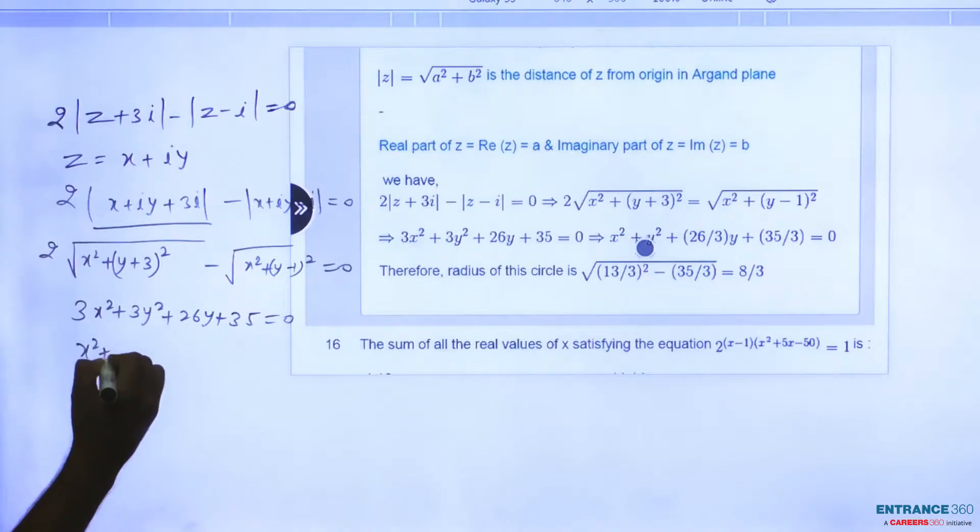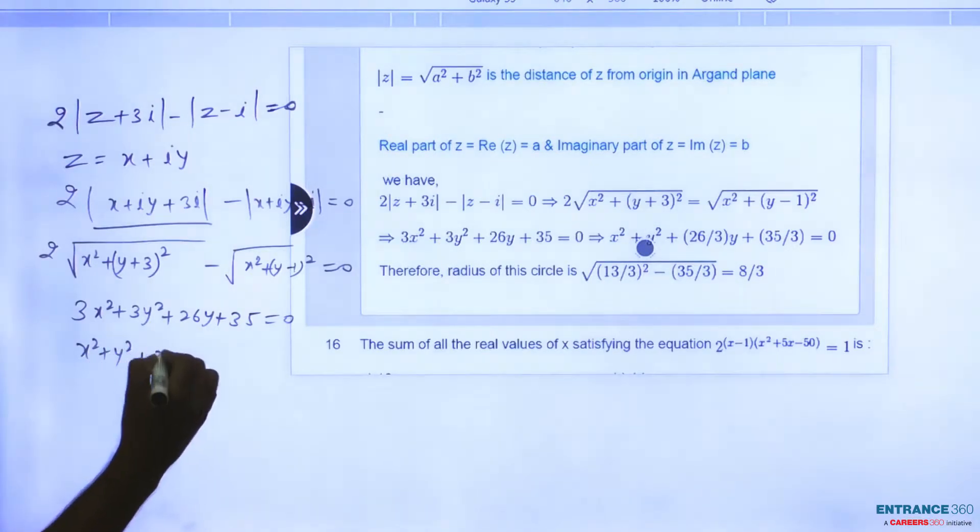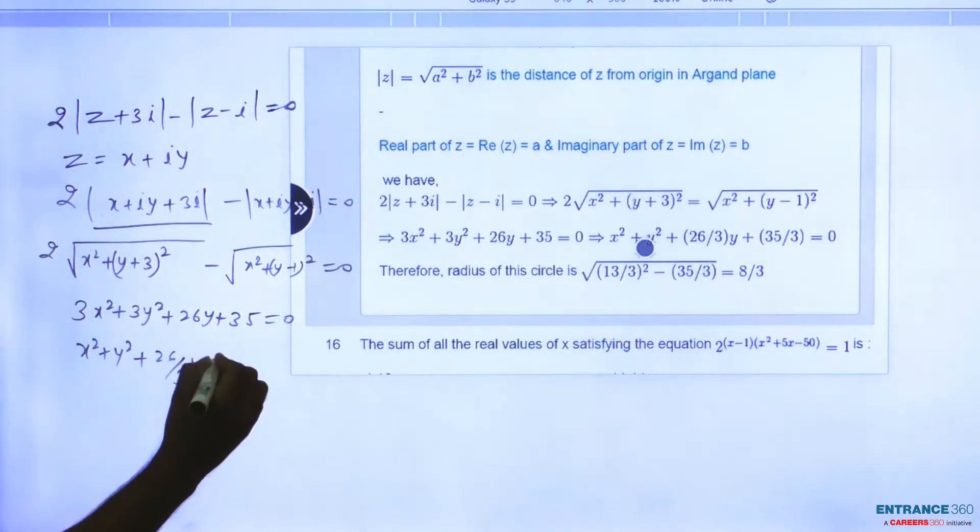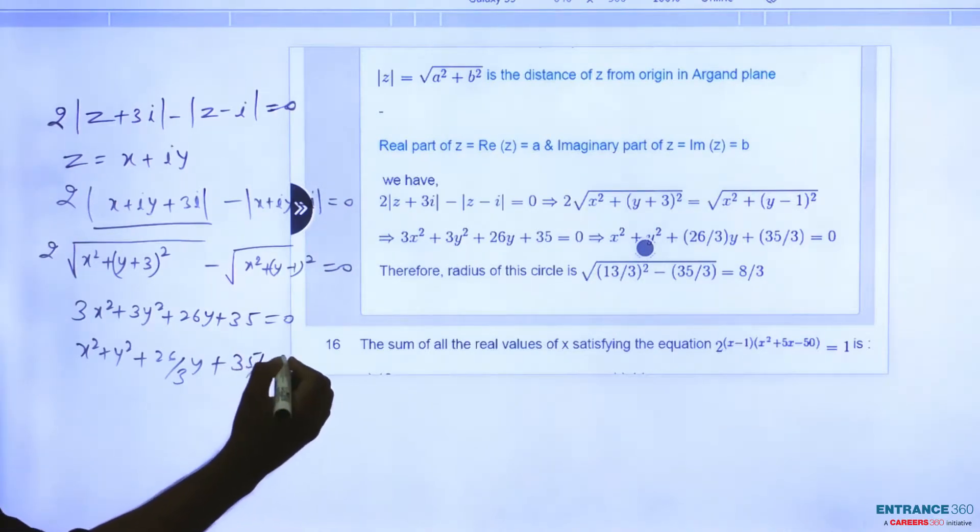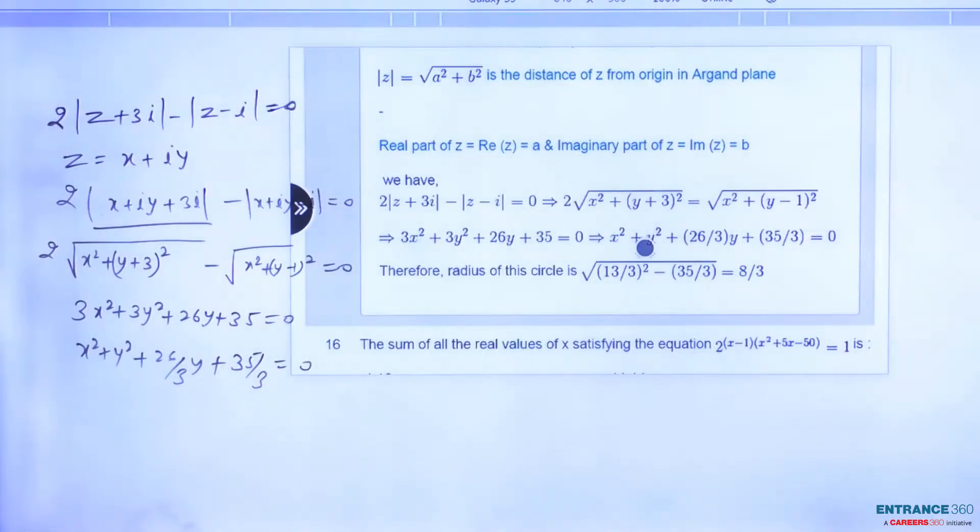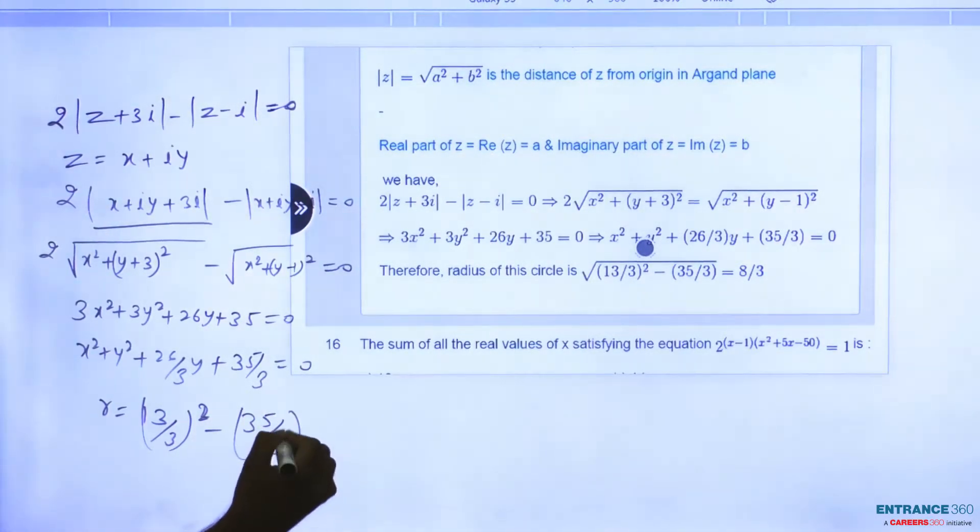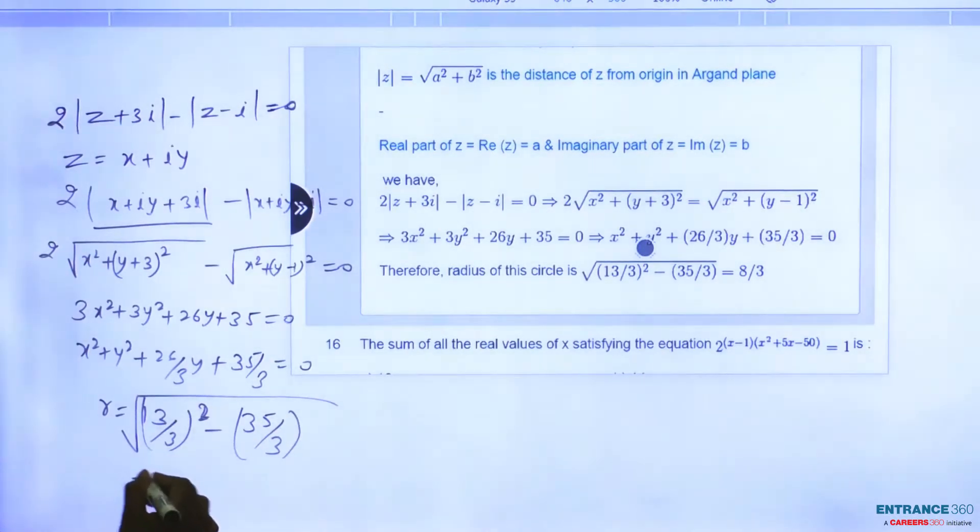And this equation would be the equation of a circle. Easily you can get by this equation. And you have to find the radius of the circle. Then you can find radius is square root of (13/3) squared minus 35/3. And after calculation, you will get radius would be 8/3.